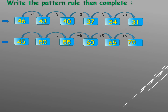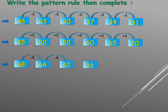Sixty-five plus five equals seventy. Third one: forty-eight becomes forty-four — the number is descending. The difference between forty-eight and forty-four is four, so our rule is minus four. Forty-four minus four equals forty, forty minus four equals thirty-six, thirty-six minus four equals thirty-two, thirty-two minus four equals twenty-eight.